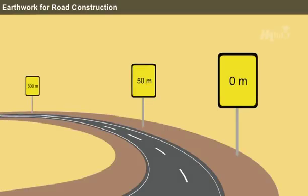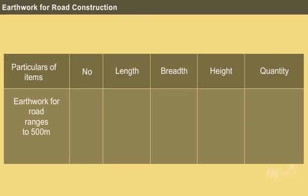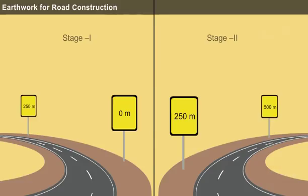Usually, the unit of lead is taken as 50 metres for a distance that ranges up to 500 metres and the earthwork is measured as a separate item of work in two stages. Stage 1: 0 metre to a distance not exceeding 250 metres. Stage 2: 250 metres to a distance not exceeding 500 metres.